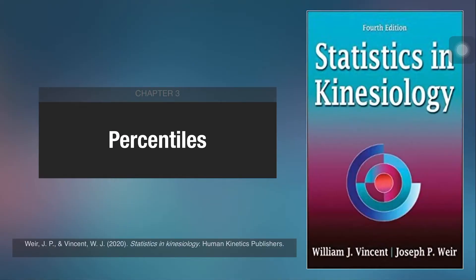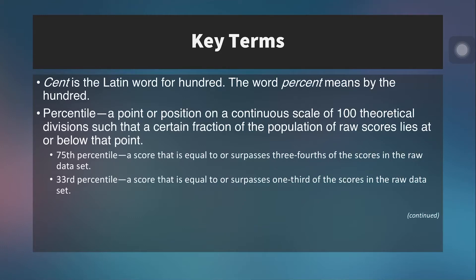Percentiles allow us to convert raw scores into percentiles that we can compare against other types of measurements, or just to evaluate how good a score is compared to the rest of the scores. This comes from chapter three in Statistics in Kinesiology by Vincent and Ware. The prefix 'cent' is Latin for hundred; percent means 'by the hundred.' A percentile is a point on a continuous scale of 100 theoretical divisions such that a certain fraction of the population of raw scores lies at or below that point.